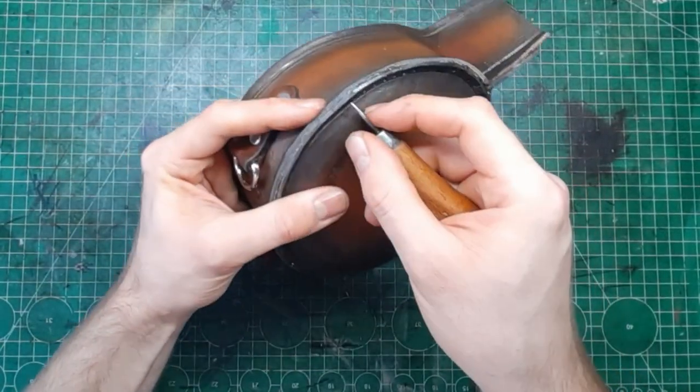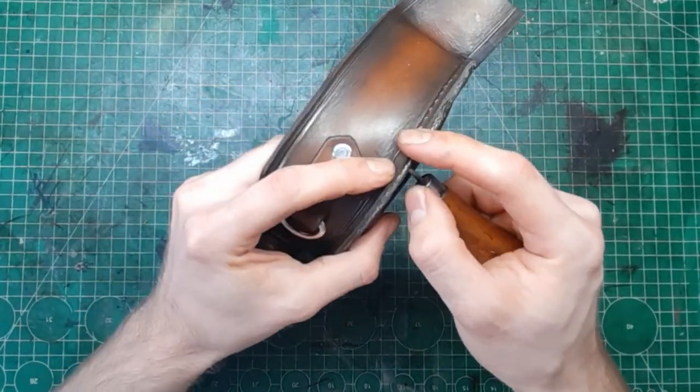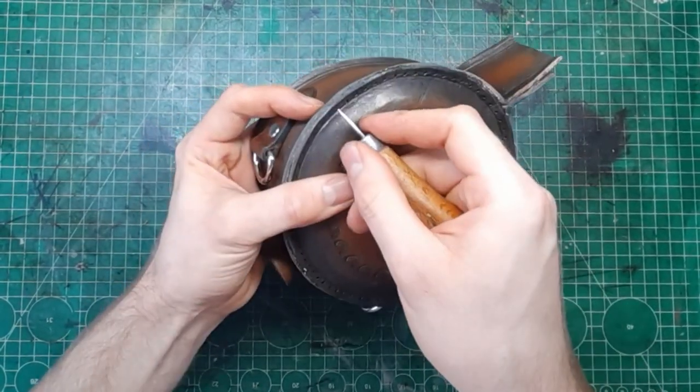When it's dry, use an awl to cut the holes completely through and then sew them really tight together.